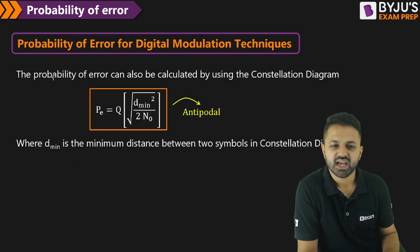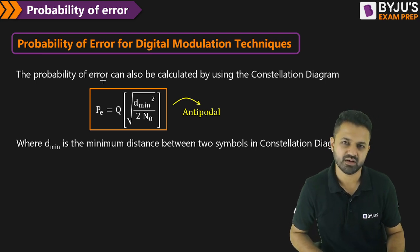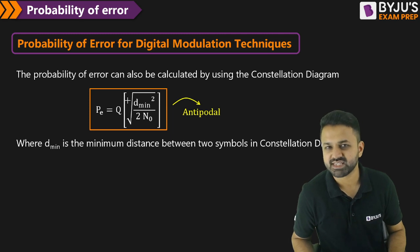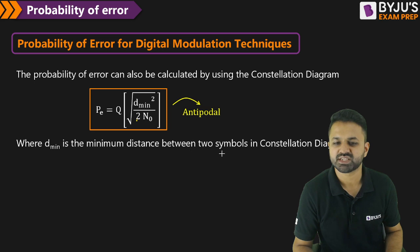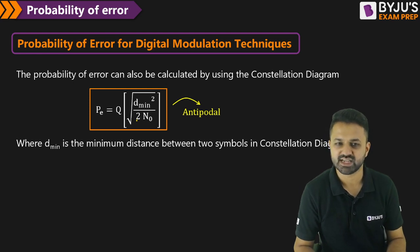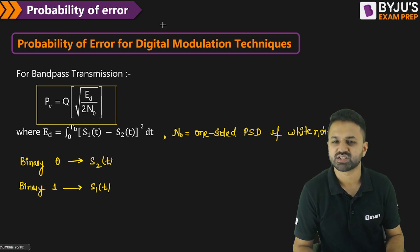The probability of error can also be calculated using the constellation diagram. In the constellation diagram, you have to calculate the minimum distance between the two symbols, then substitute in the expression: Q of root over (D_minimum squared divided by 2N0). D_minimum is the minimum distance between the two symbols in the constellation diagram, and N0 is the one-sided power spectral density of AWGN noise. This is the Q function.